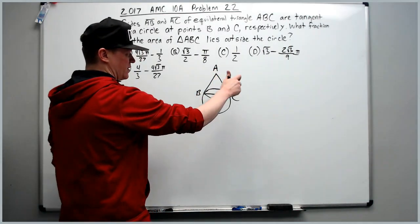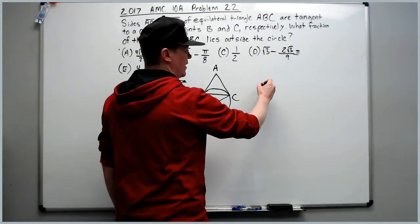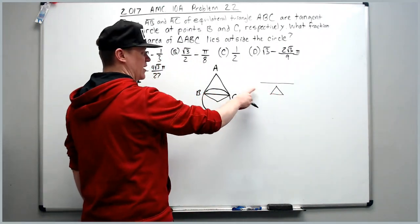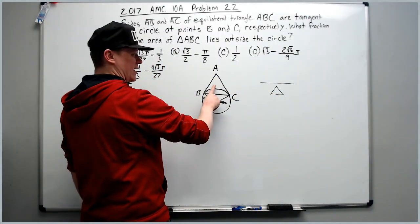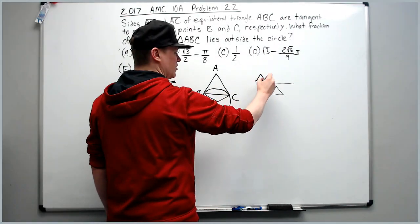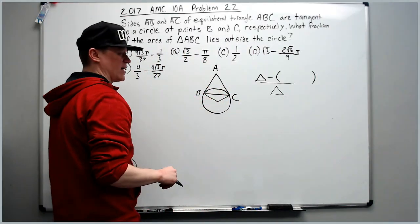Sometimes I like to draw a picture of what I want. I need a fraction line with the equilateral triangle in the denominator because I want what fraction of the triangle lies outside the circle.